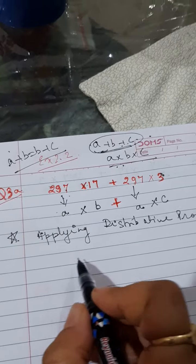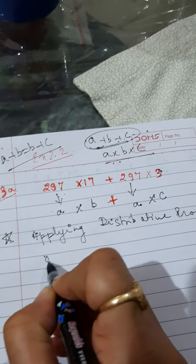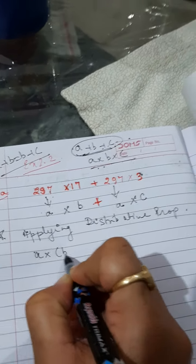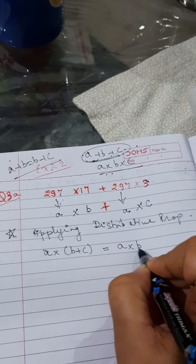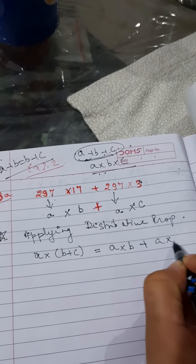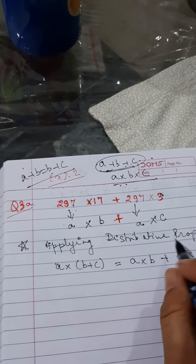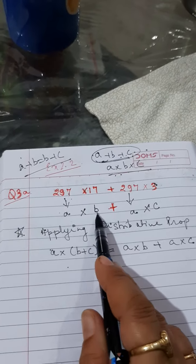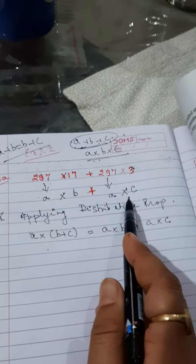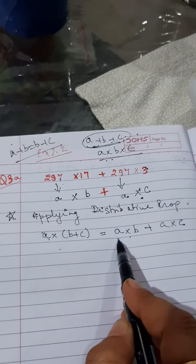I told you, in distributive property, we have a into (b plus c) equals a into b plus a into c. And then you have to see from the question after taking out these variables. Then you have to check in which form it is given.